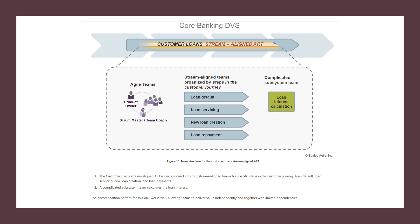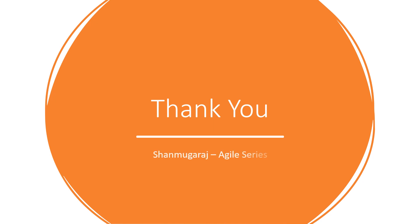With this we come to the conclusion of this video. Hope you guys got a better understanding of how to organize and place your teams using team topologies within your ART. We discussed retail banking DVS in my previous video; in this video we talked about core banking DVS — two ARTs and how to use team topologies within that ART with a combination of stream-aligned teams, complicated subsystem teams, platform teams, and enabling teams. I hope you guys liked this kind of video that helps you become a better agile leader or agile transformationist in your organization. With that I'm signing off — see you in the next video.